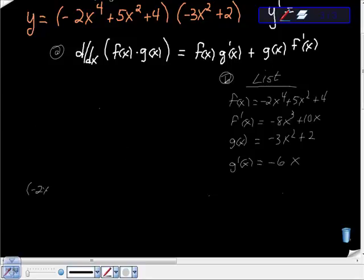I'm going to take my negative 2x to the fourth plus 5x squared plus 4, the first function, times the derivative of the second function, which happens to be negative 6x. And then we're going to add those.